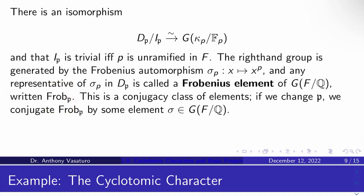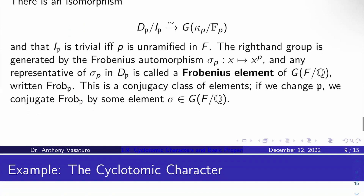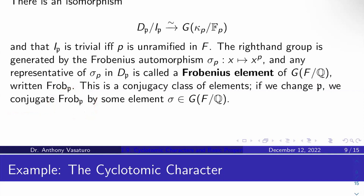If you change the prime 𝔭 over little P, you might get a different element back in D_𝔭. But changing 𝔭 ends up conjugating Frob_𝔭 by some element sigma in Gal(F/Q). So when we say a Frobenius element Frob_𝔭, we again mean a conjugacy class of elements in the decomposition group of P.